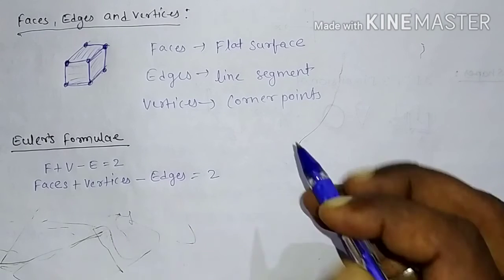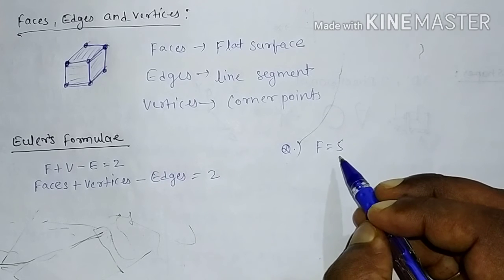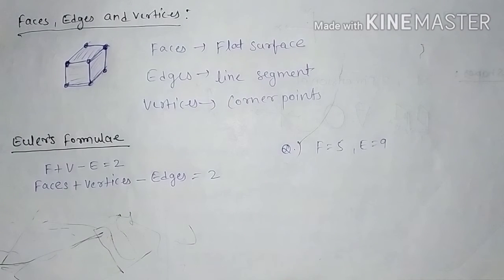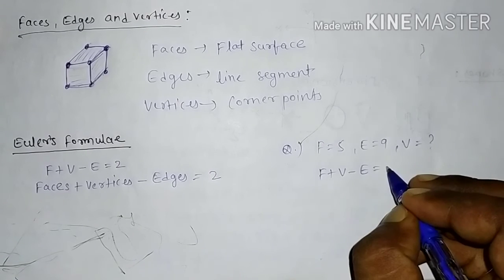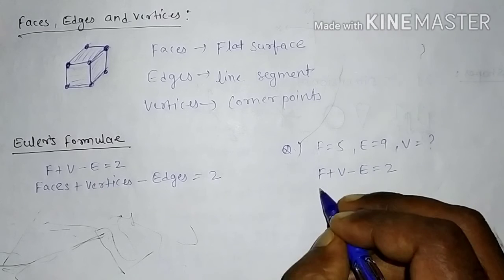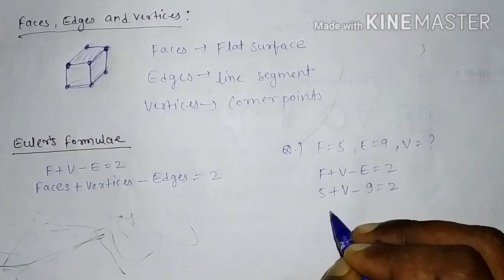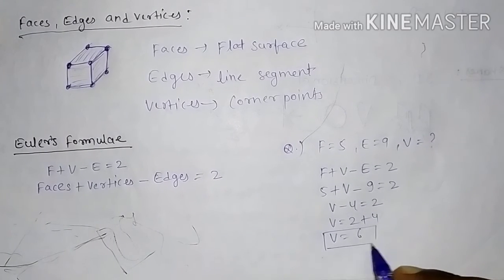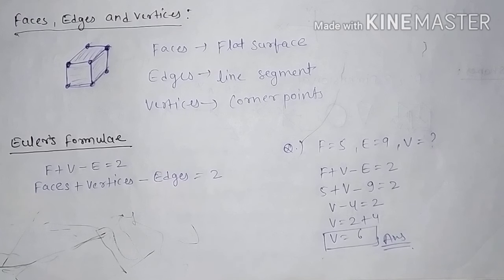On the basis of this formula, suppose a question is given: F = 5 (faces = 5), E = 9 (edges = 9), and we have to find V (vertices). Simply apply Euler's formula: F + V − E = 2, so 5 + V − 9 = 2, giving V − 4 = 2, so V = 6. The vertices are 6.